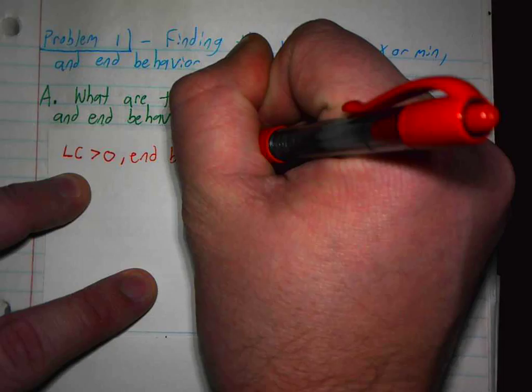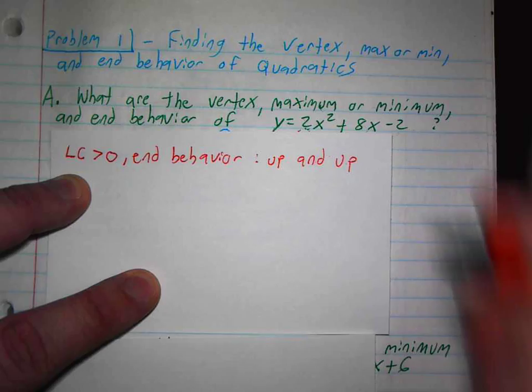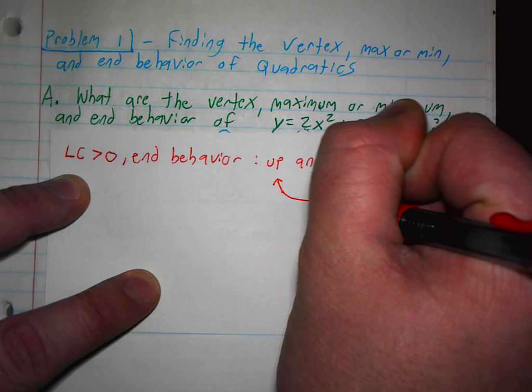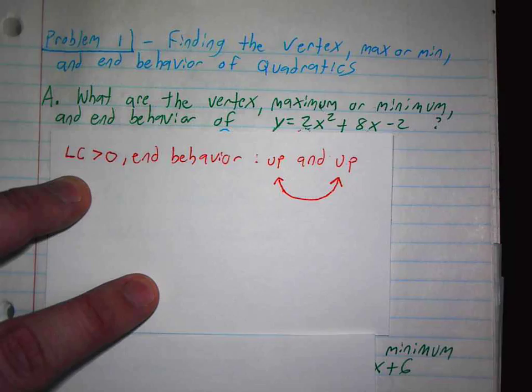Now if that had been a negative 2, then I would write down and down. But this right here, the end behavior is up and up. I answered one of the four questions.